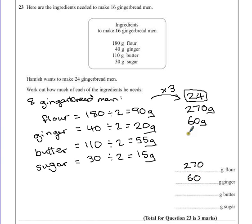Butter is going to be 55 times 3. Well, 50 times 3 is 150, 5 times 3 is 15, so that's 165 grams altogether. So butter would be 165.